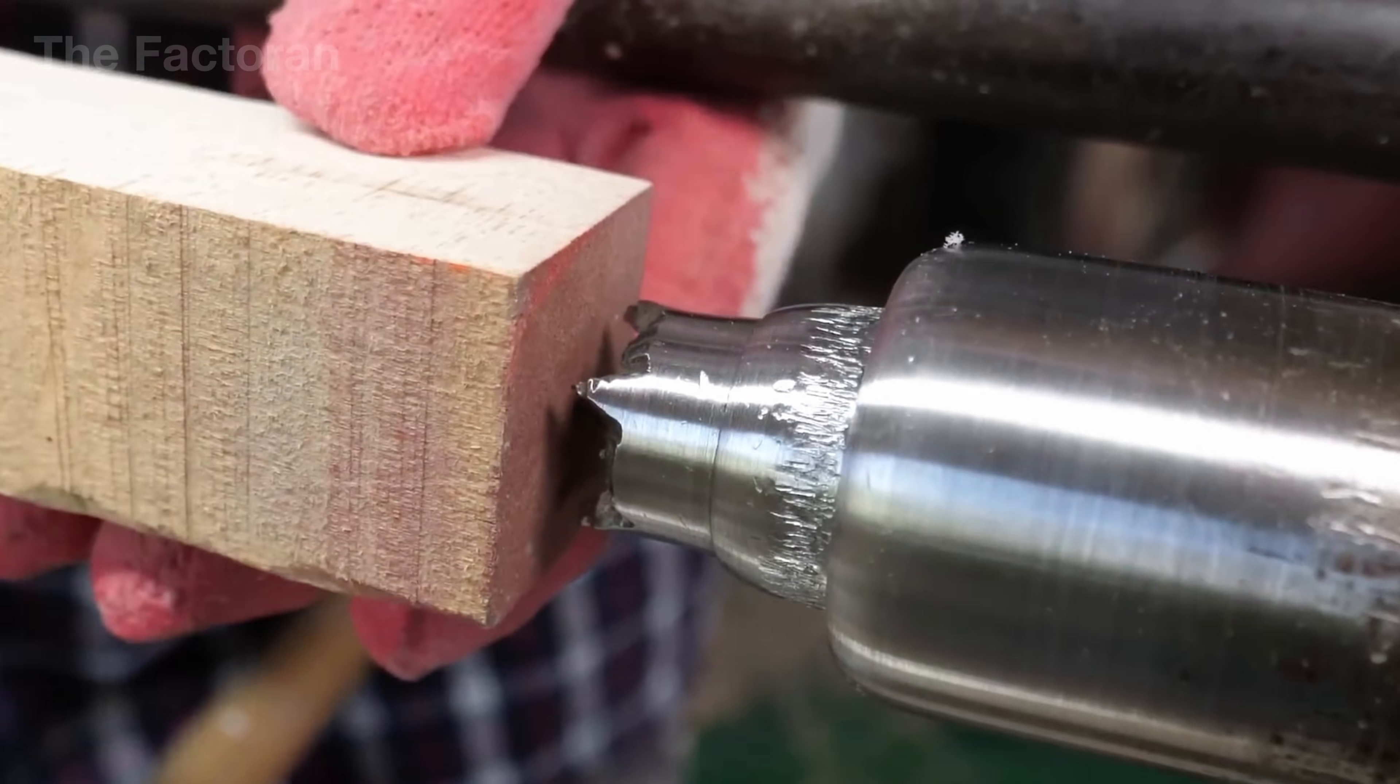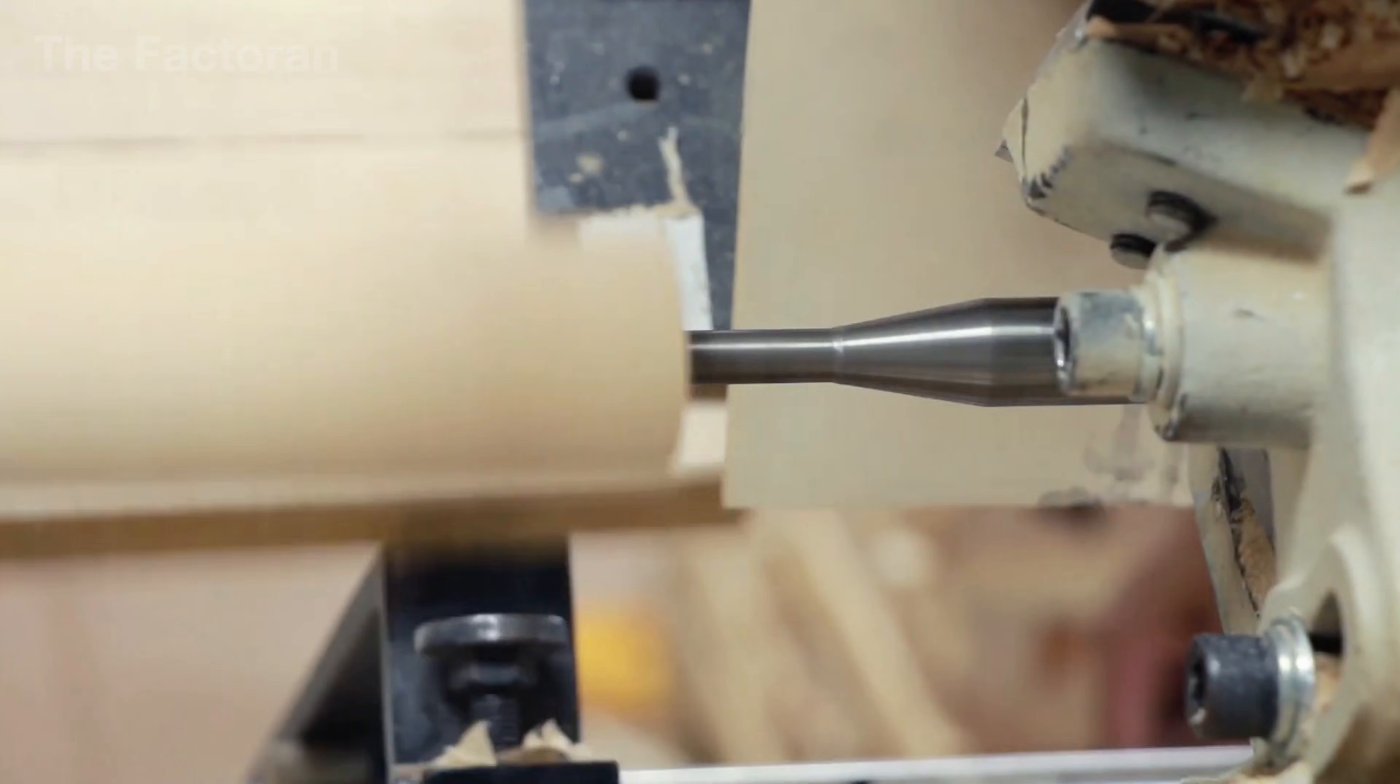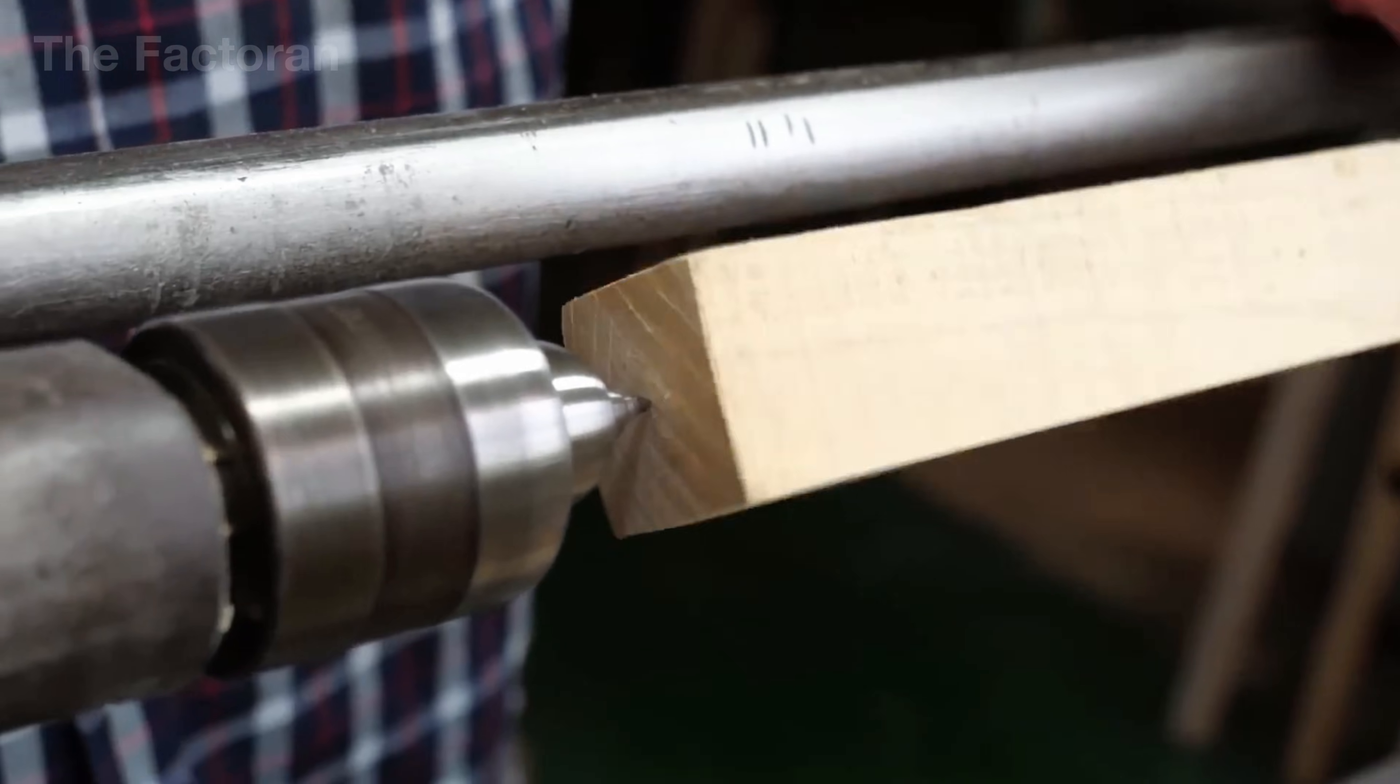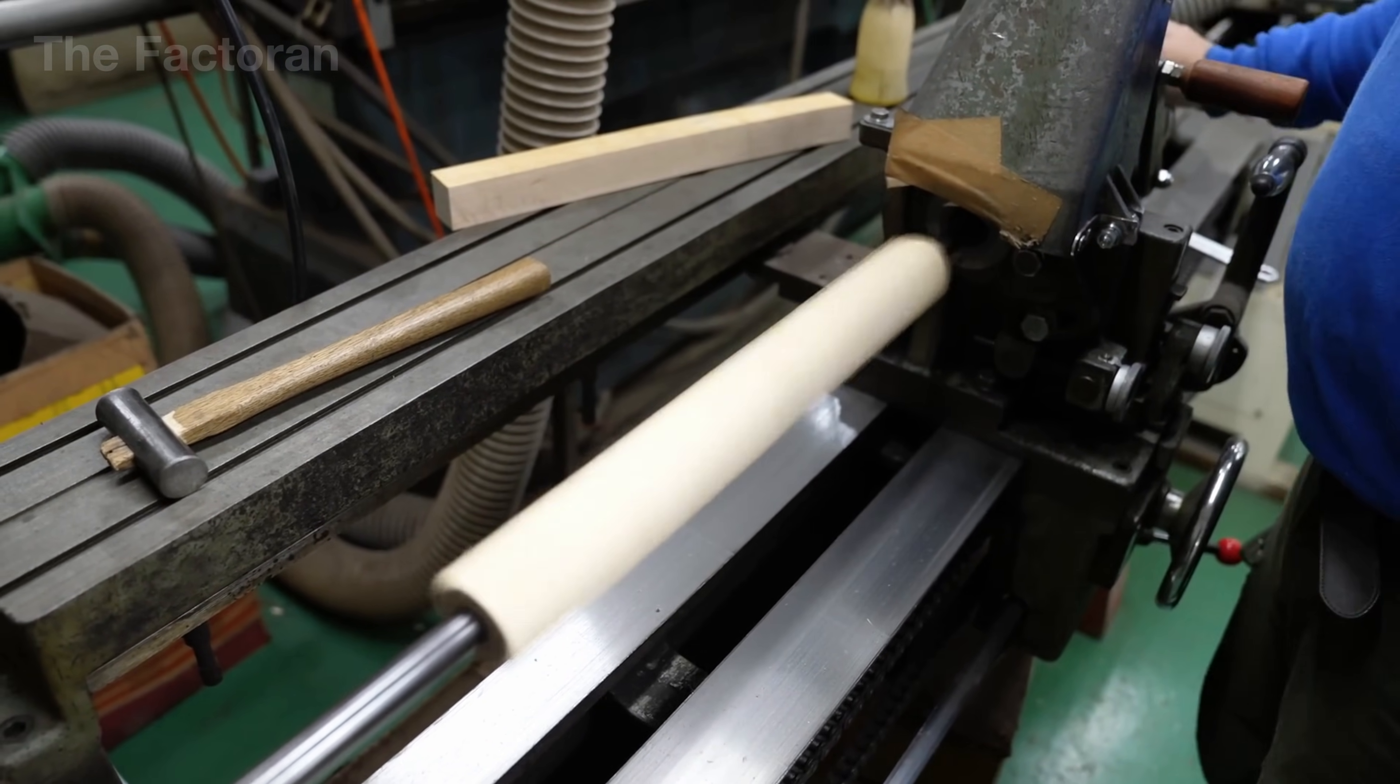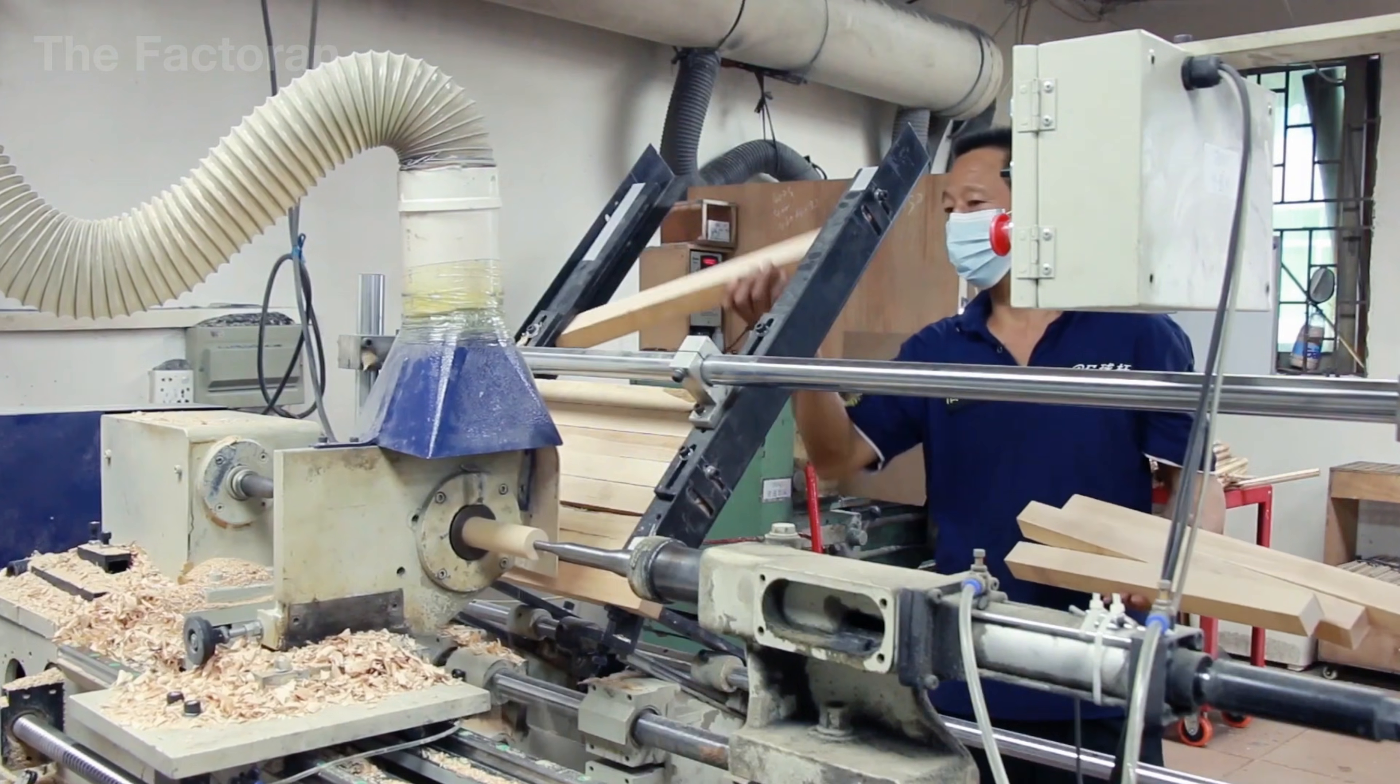As soon as the wood blank meets the standard, precise center holes are drilled into both ends to define a perfectly aligned rotational axis. This is a critical step, because even a tiny misalignment would affect the straightness of the entire cue.